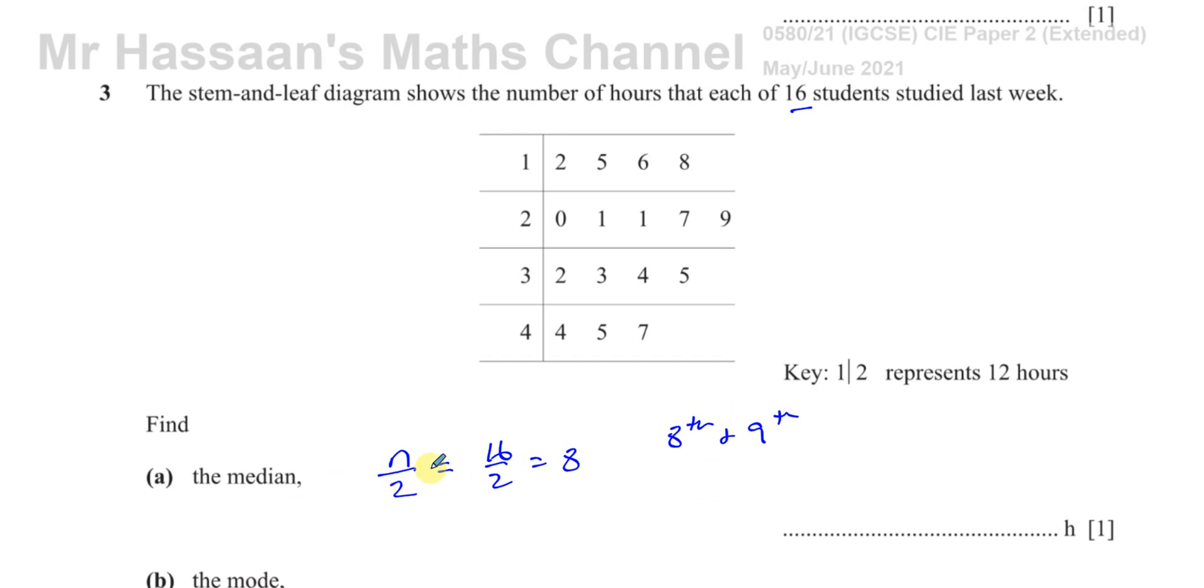If I did n divided by 2 and it gave me a decimal, then the next number up, next term up would be the median term. For example, if there were 17 terms instead of 16, I would have 17 divided by 2. That would give me 8.5, so it would be the ninth number that's in the middle, just one number in the middle. But when you have an even number of entries, when you do that number divided by 2, it gives you a whole number. So it's that number and the next number. So it's between the eighth and the ninth term.